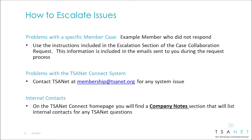Three types of issues may arrive that you need to escalate. The first is a problem with a specific case — use the escalation instructions that are included in all emails. For any type of system issue, contact TSA-NET. On the TSA-NET Connect home page, you also find a company note section that will include internal contacts that can be used as needed.